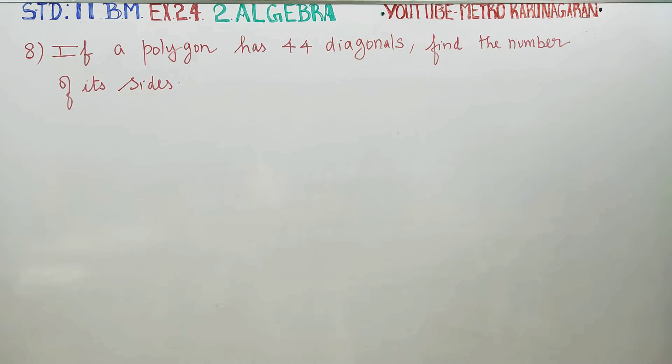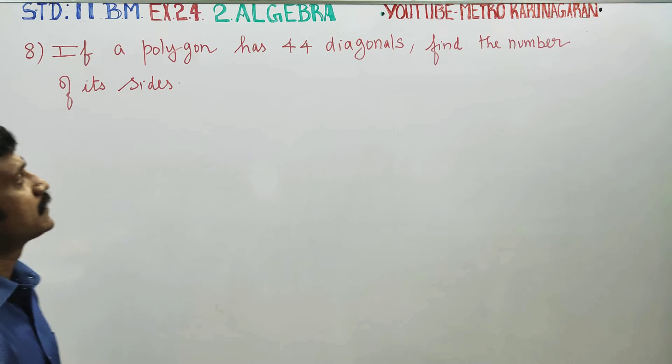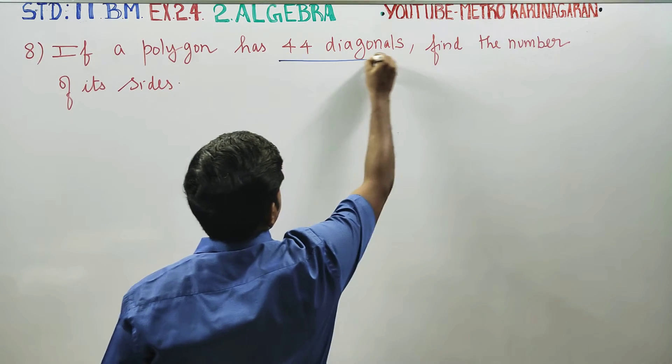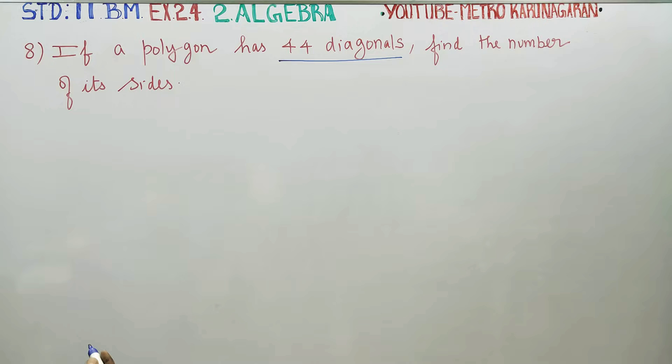Dear 11th Standard Business Math students, in Exercise No. 2.4, Sum No. 8: If a polygon has 44 diagonals, find the number of its sides.